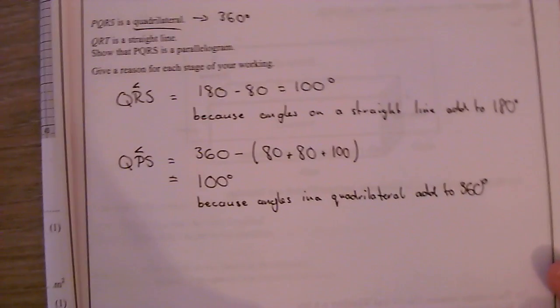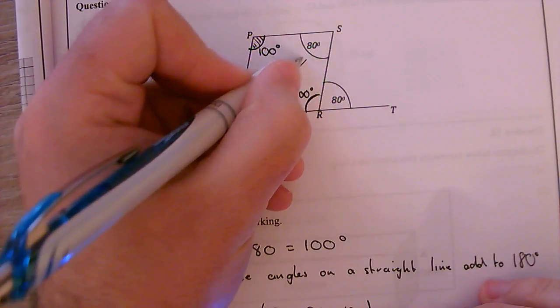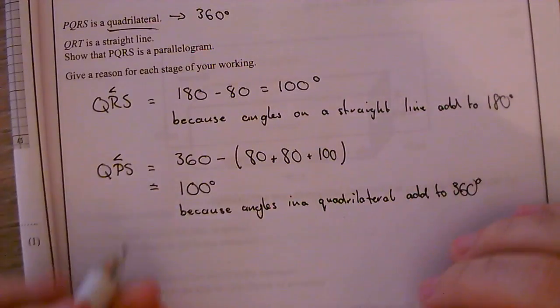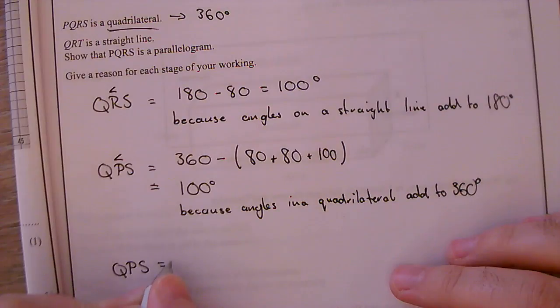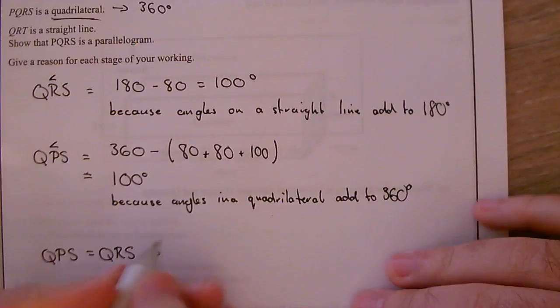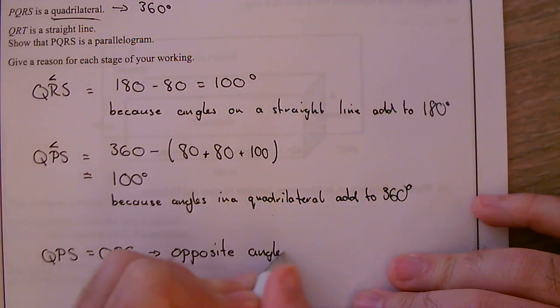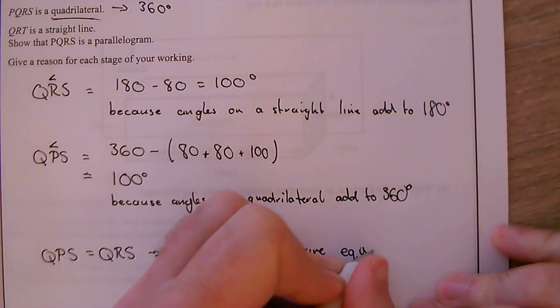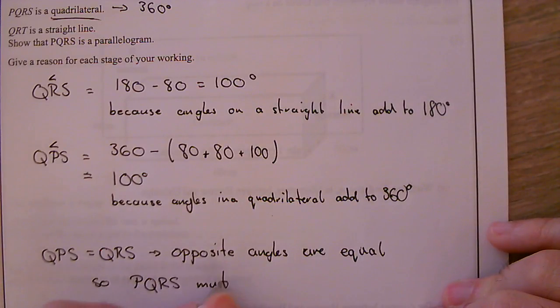OK, now, looking at this, because those two there are the same, and those two there are also the same, OK, QPS equals QRS, so opposite angles are the same. So, PQRS must be a parallelogram.